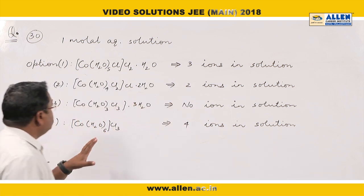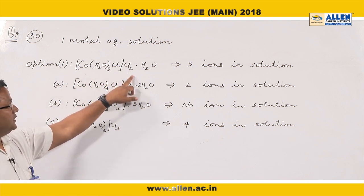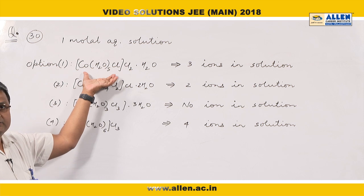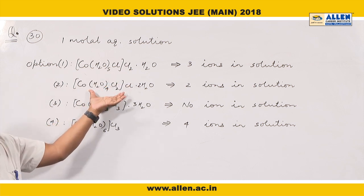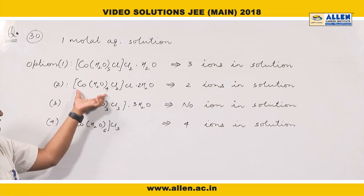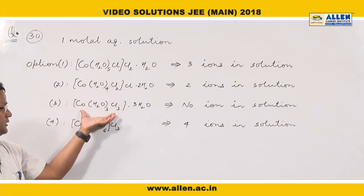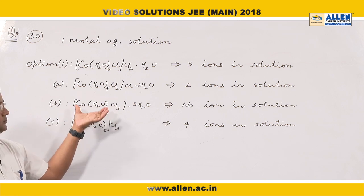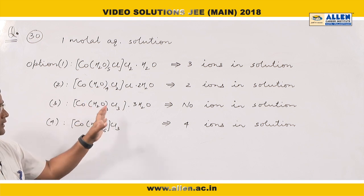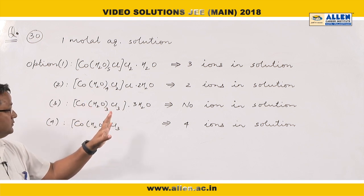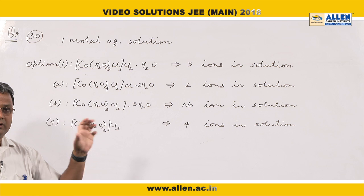One compound breaks into three particles in solution: one coordination sphere and two chloride ions. Another compound gives two ions in solution: one coordination sphere and one chloride ion. Since all three chlorides are within the coordination sphere in one compound, it does not dissociate into chloride ions, and the number of free ions in solution is zero — it exists only as the coordination sphere.